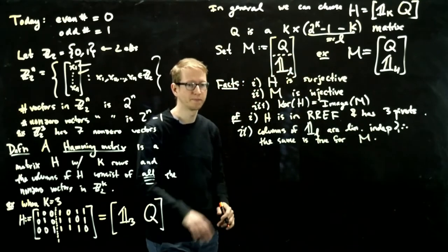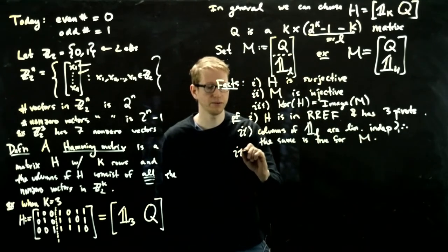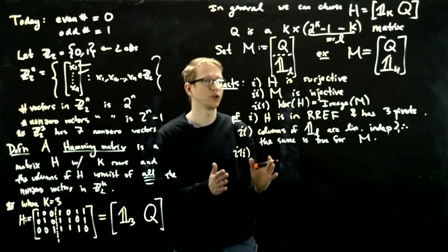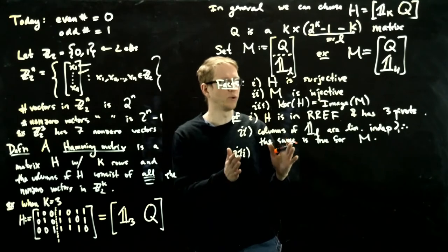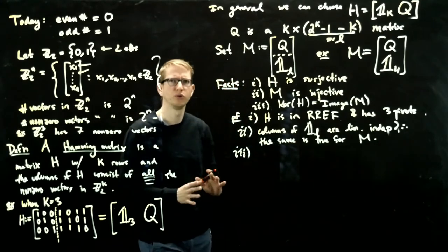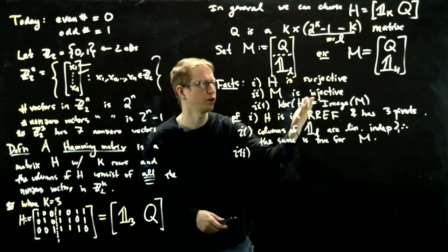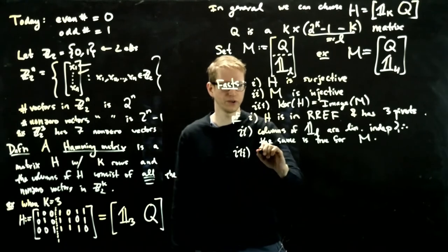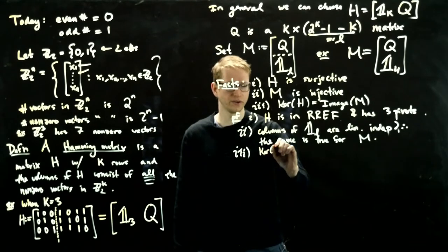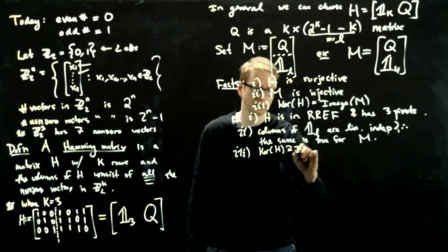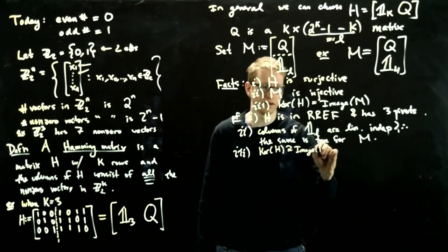So these two proofs are not bad. The third one isn't bad either, but it's definitely a little bit more involved. So, in order to show that the kernel of one matrix equals the image of another, we have to show that both inclusions hold. Namely that the kernel is a subset of the image, and the image is a subset of the kernel. So first we'll prove that the kernel of H contains the image of M.